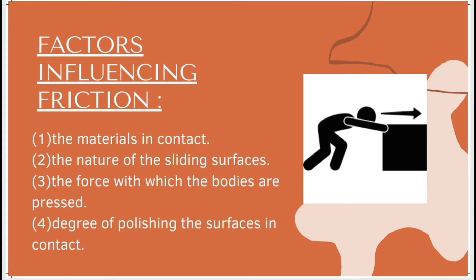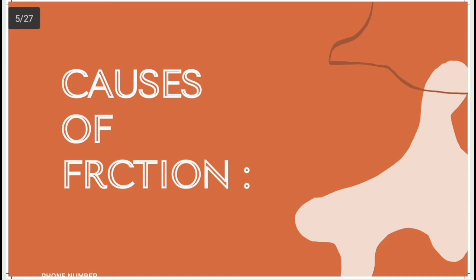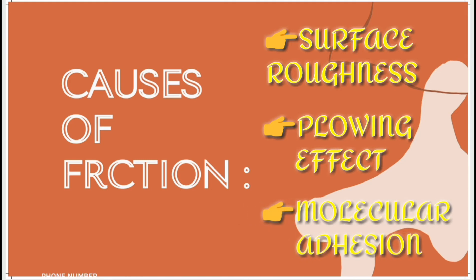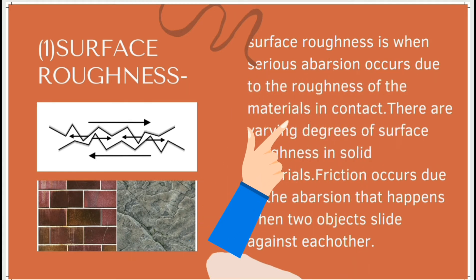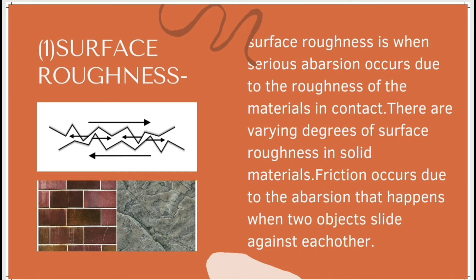We have seen the factors which influence friction. But what are the causes of friction? We have three important causes of friction: surface roughness, ploughing effect, and molecular adhesion. First, surface roughness — this occurs when serious aberration occurs due to the roughness of the materials in contact. All materials are not smooth; there are some irregularities. Due to the interlocking between these irregularities, friction occurs when two objects are in contact and force is applied.